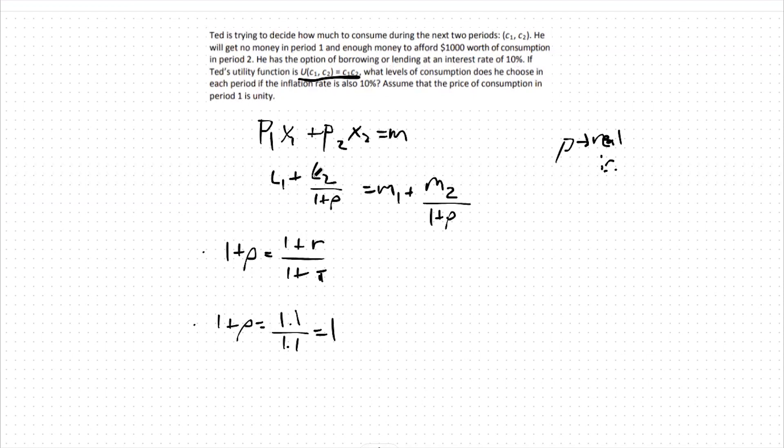Let's plug back into our budget constraint then. This means c1 plus c2 equals m1 plus m2. We can standardize, given that our real interest rate has effectively no change on the value of our money.